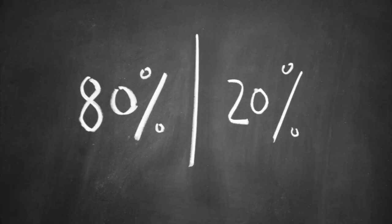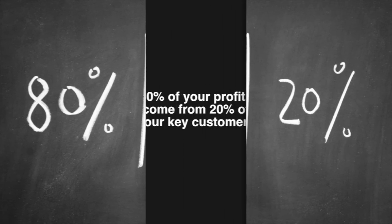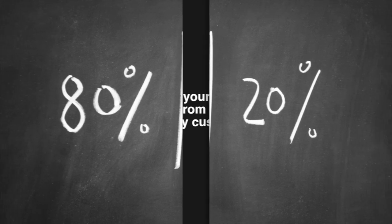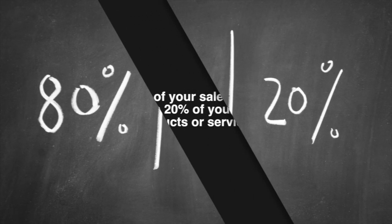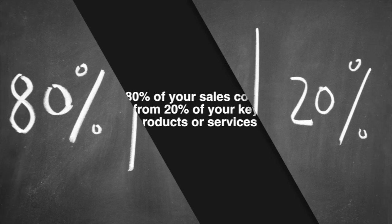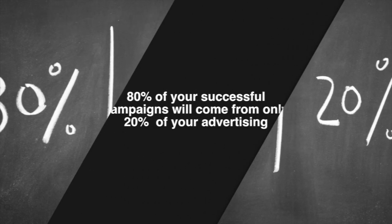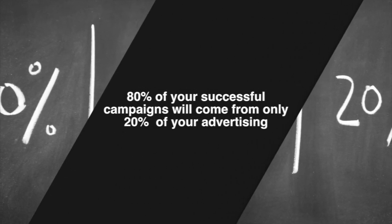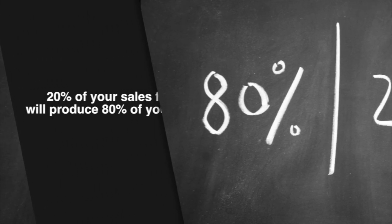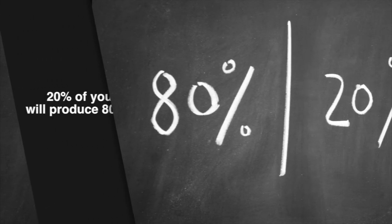Some business examples of the Pareto principle are: 80% of your profits come from 20% of your key customers; 80% of your sales come from 20% of your key products or services; 80% of your successful campaigns will come from only 20% of your advertising; and 20% of your sales force will produce 80% of your sales.